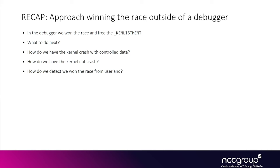If we are able to replace the freed k-enlistment with controlled data in the kernel, it will be useful to know we won the race condition — because once we win the race we may want to do additional things like building an arbitrary read-write primitive so we can get better exploitation primitives than just the use-after-free. We also need to avoid the kernel crashing, so we have a few challenges to solve.